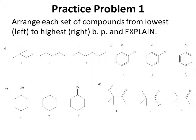Practice Problem 1: arrange each set of compounds from lowest (left) to highest (right) boiling point and explain. Remember, you have to consider both attractive forces and surface area. The higher the surface area, the higher the boiling point. The higher the attractive forces, the higher the boiling point. And remember that intramolecular hydrogen bonding lowers boiling points, while intermolecular hydrogen bonding raises boiling points.